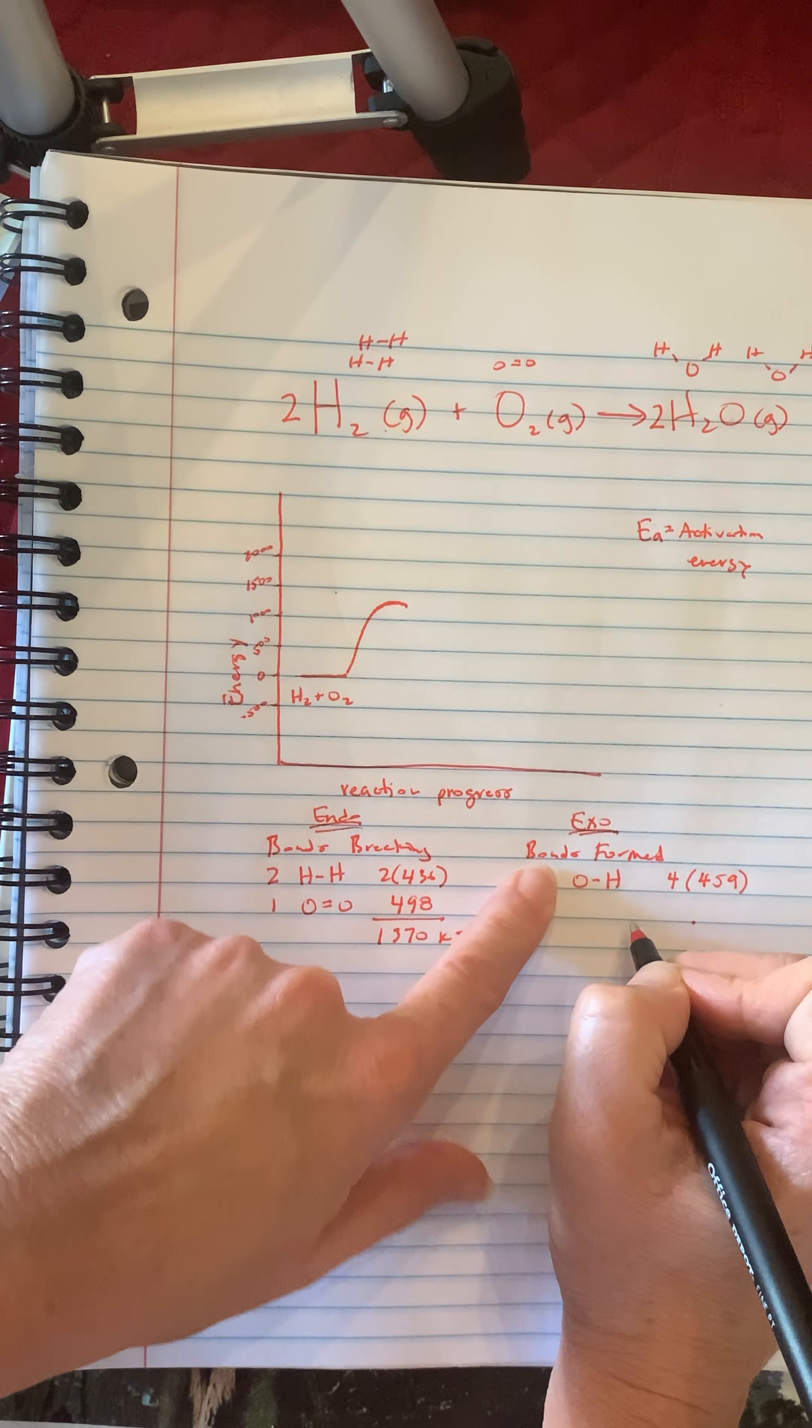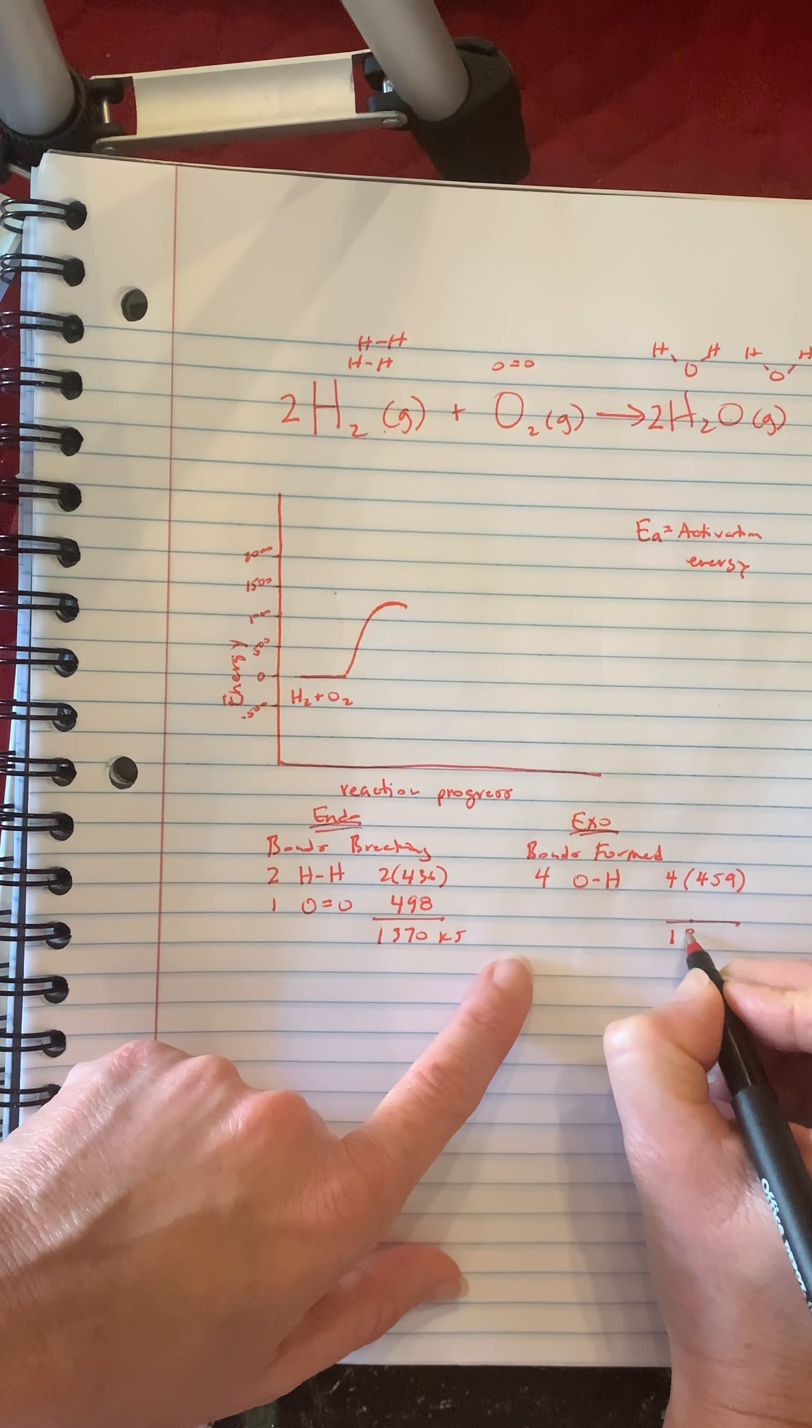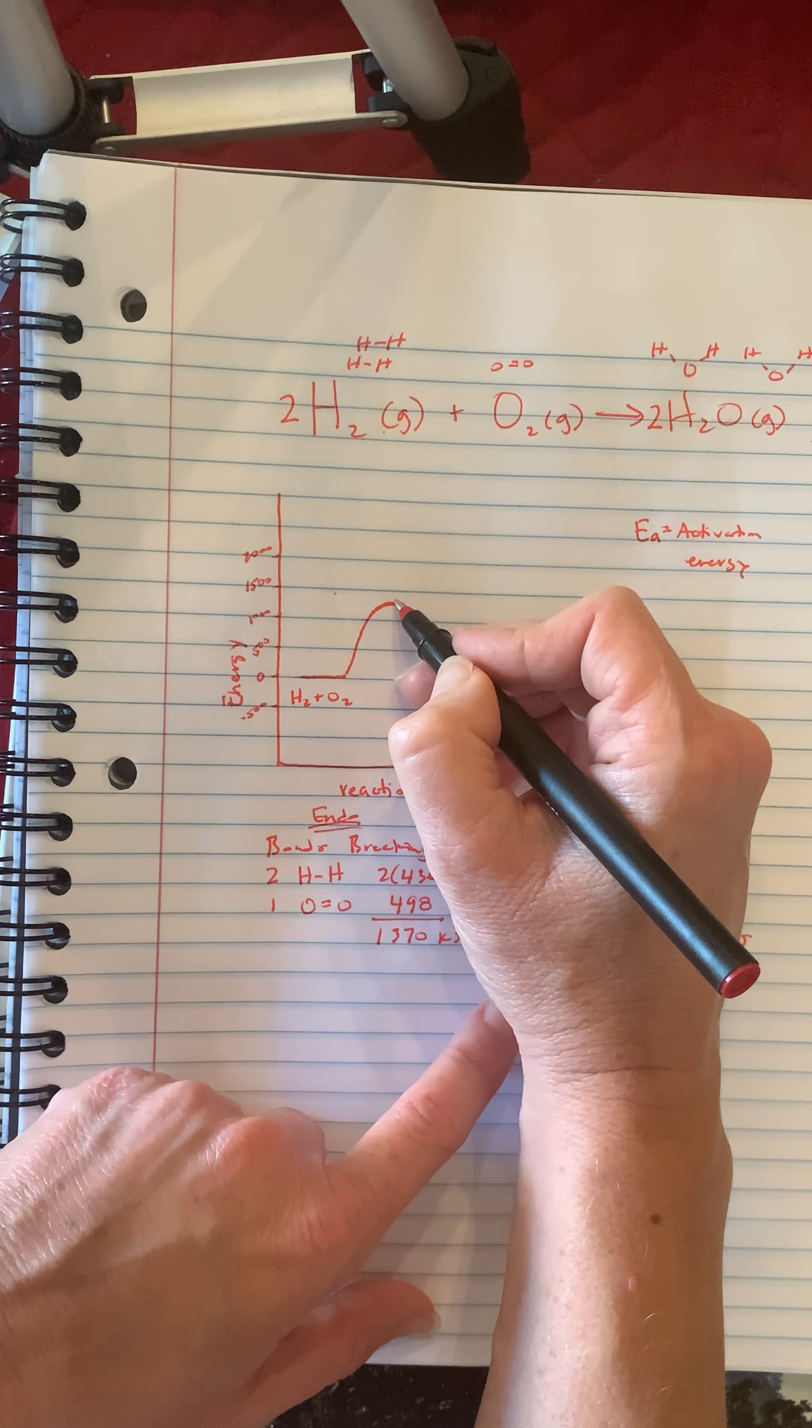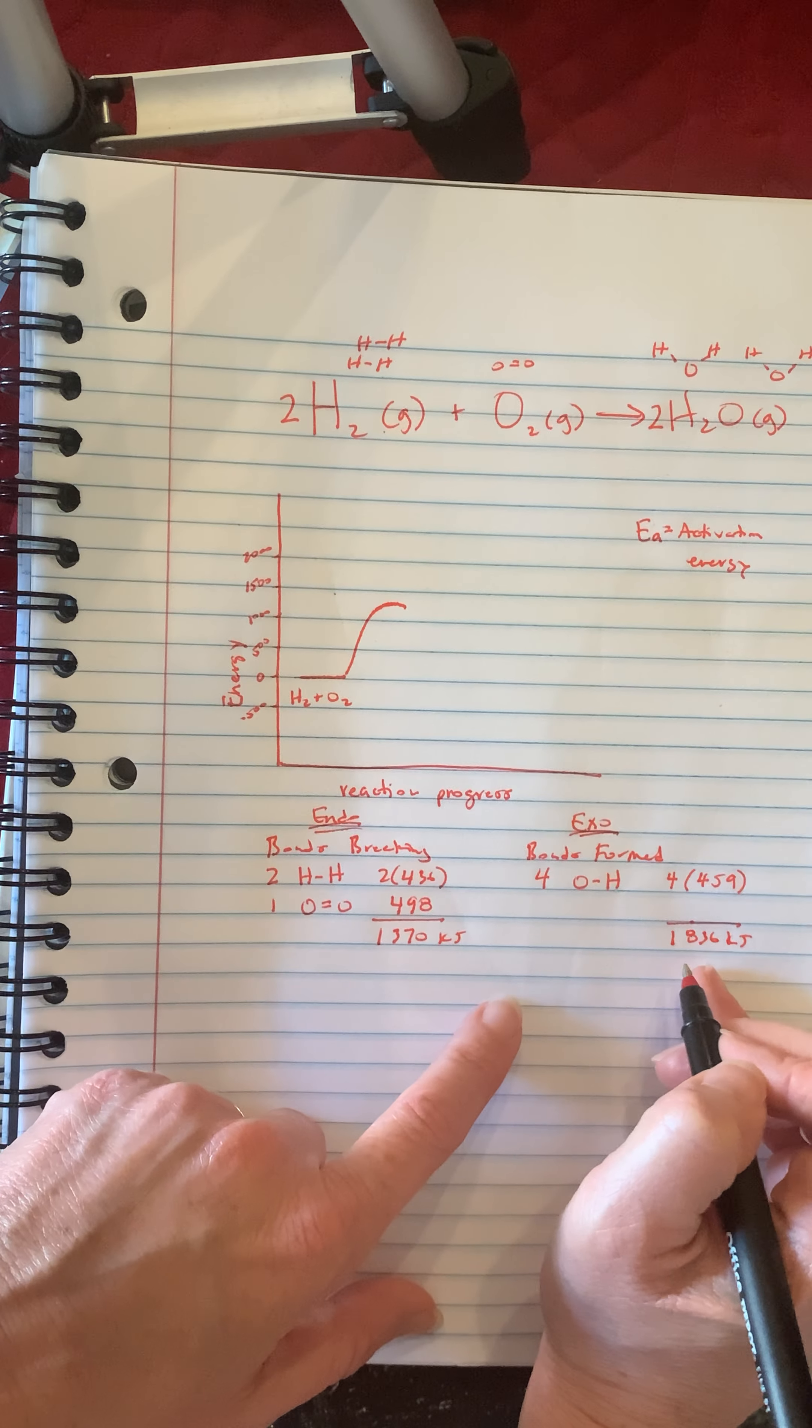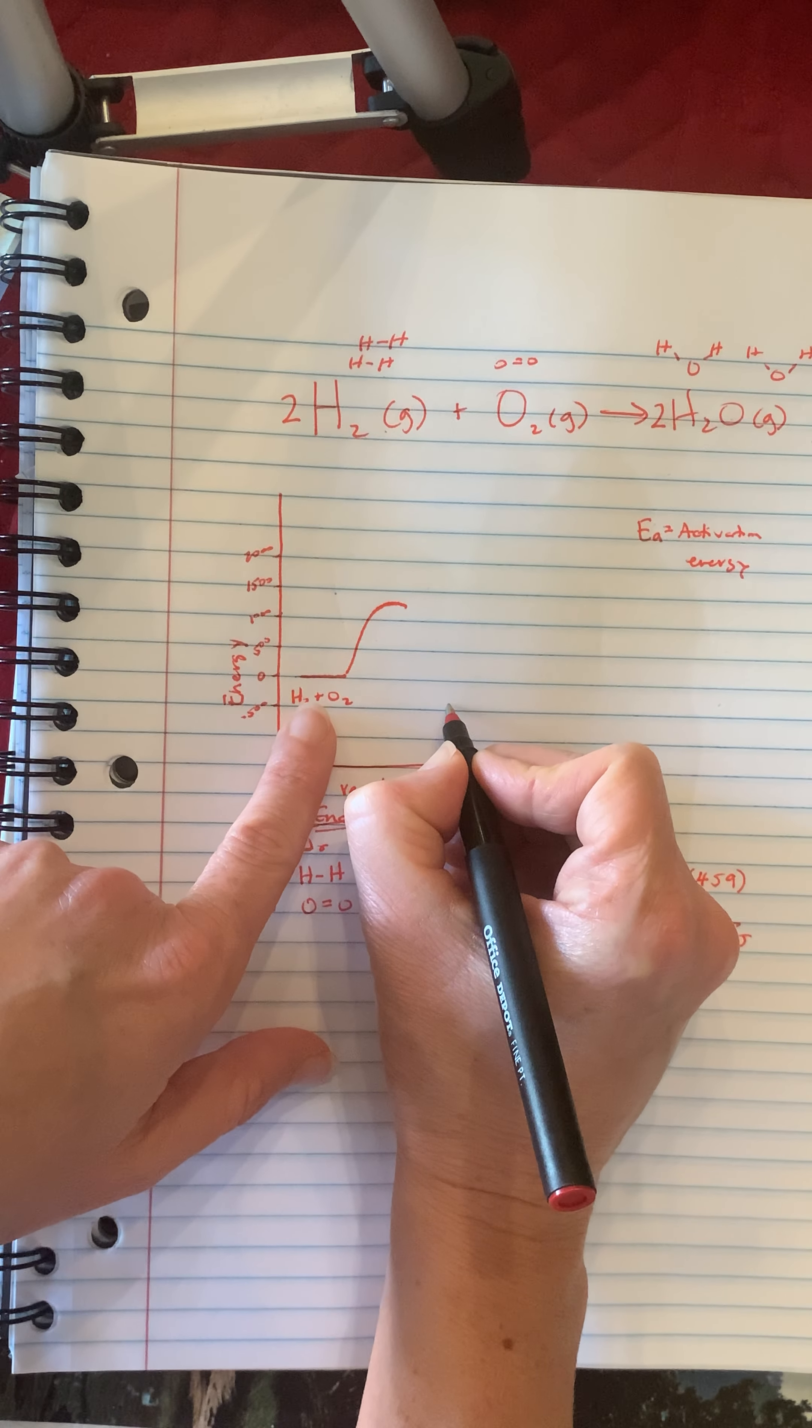So total out will be 1,836 kilojoules. So from this point going down 1,800 we're going to end up almost to this line down here.